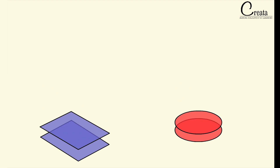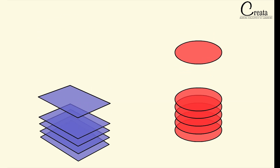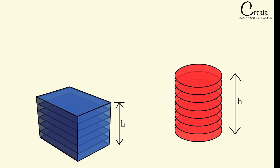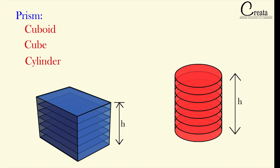Till now we have generated all our 3D objects or 3D shapes by stacking up a 2D figure. We keep on adding this 2D figure until we get a solid shape. Like in the case of cuboid, we have taken a rectangle. In case of cube, we have taken a square. And in case of cylinder, we have taken a circle. These types of figures are known as prisms. So till now we have seen the prisms as cuboid, cube, and cylinder.